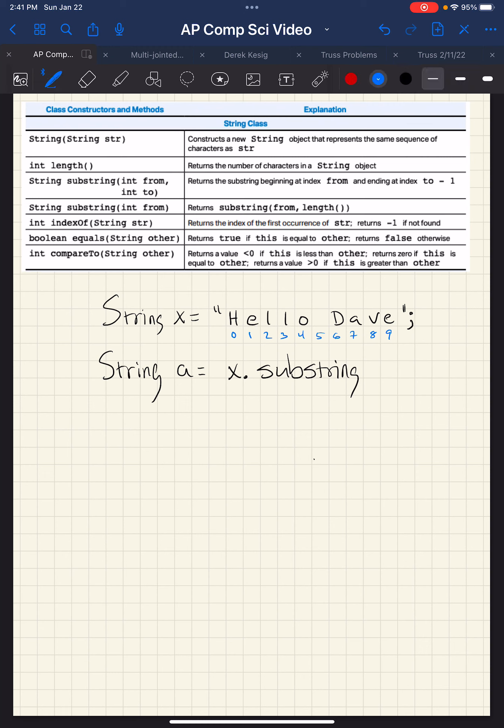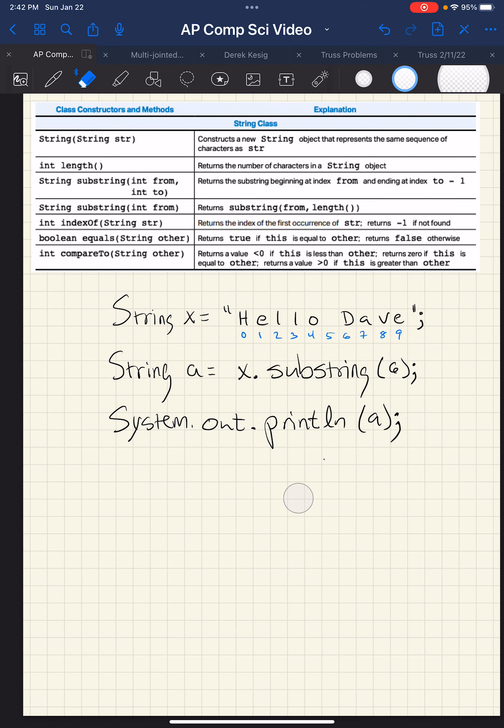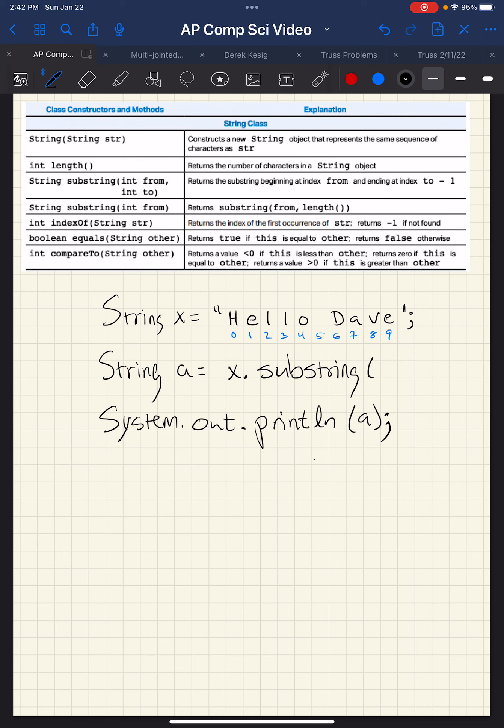So that's the substring method that takes two parameters, from and to. Then there's a substring method here, just says from. And that's from and then to the length, but that's length minus one, so it's from that point to the end. So if we do substring six, we just give it one parameter, and then we say System.out.println a. It's going to go from six to the end of the string. So six, seven, eight, nine, so it'll print D, A, V, E. If we do substring three, it's going to go from three to the end, so you will get L, O, space, D, A, V, E. So those are the two ways to do substring.